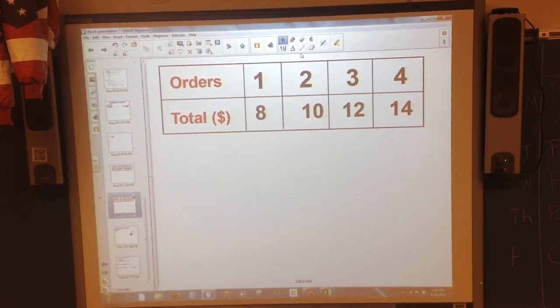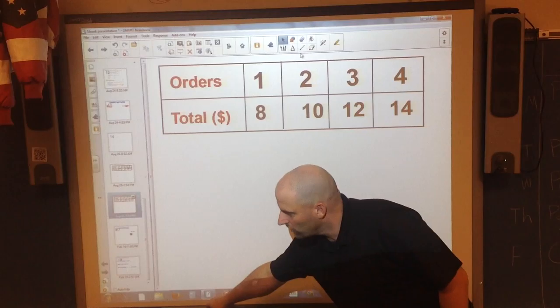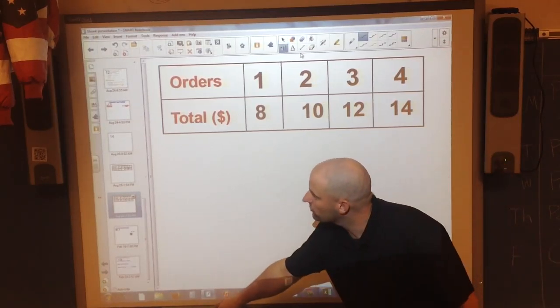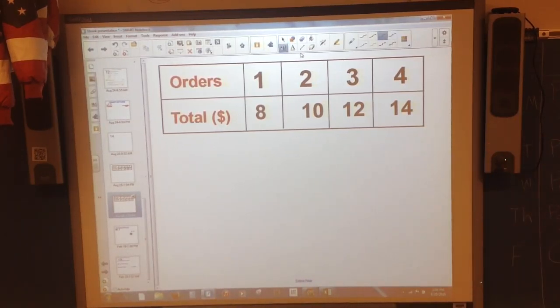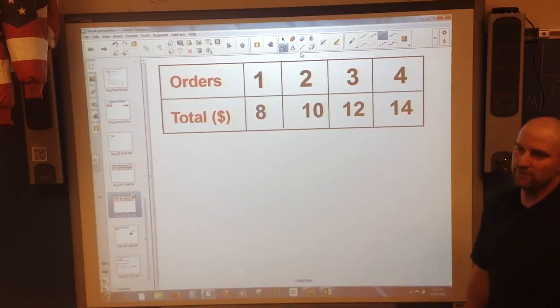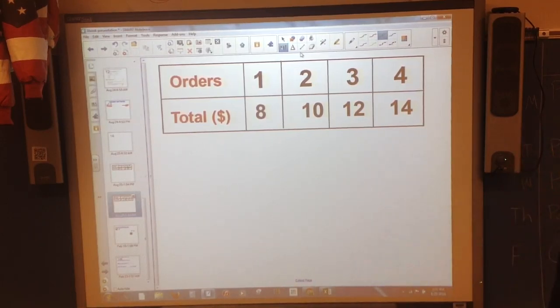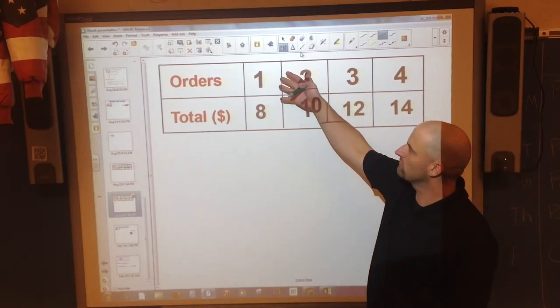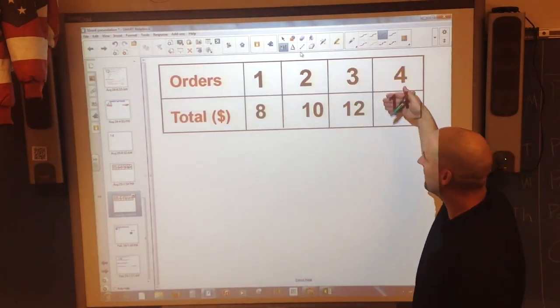Okay, so today we're going to be learning about the word proportional and trying to figure out what proportional means. The definition that your book gives you is that something is proportional if it has a constant unit rate, or a unit rate that always will simplify down to the same thing.